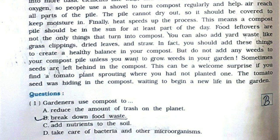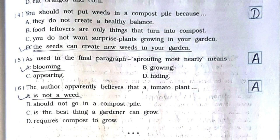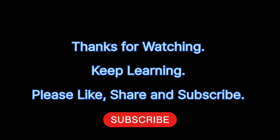The questions are: First: gardeners use compost to — option B, break down food waste. Second: to take care of a compost pile you have to — option D, first, second, and third, meaning all. Third: people should start a compost pile if they — option C, want to put their food waste to good use. Fourth: you should not put weeds in a compost pile because — option D, the seeds can create new weeds in your garden. Fifth: as used in the final paragraph, 'sprouting' most nearly means — option A, blooming. Sixth: the author apparently believes that a tomato plant is not a weed — option A. And here we come to the end of Chapter 5, 'Invention'.